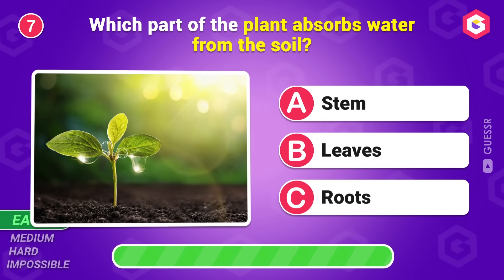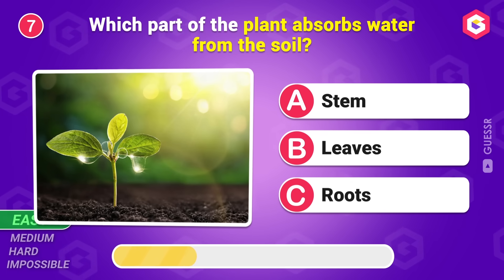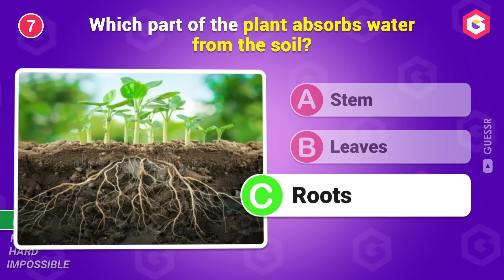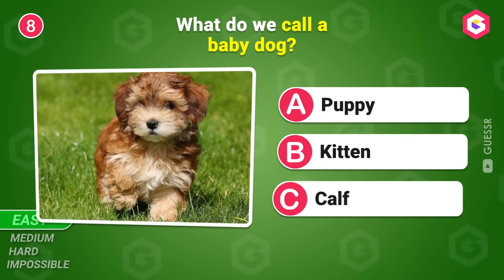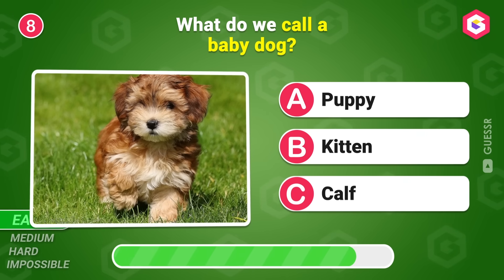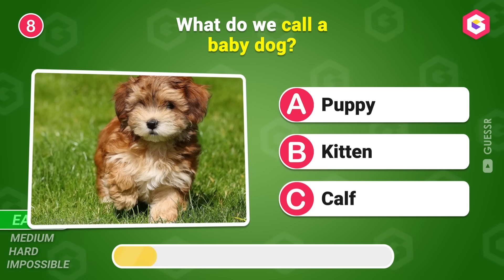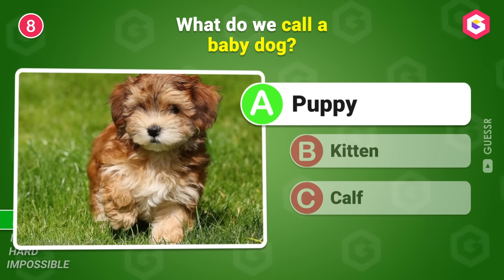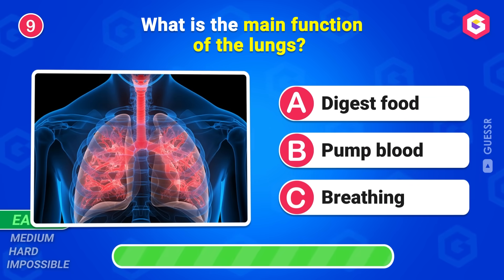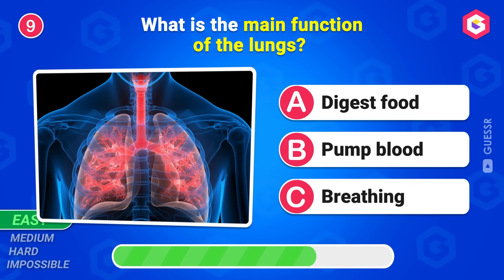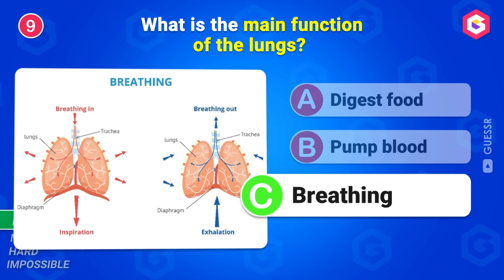Which part of the plant absorbs water from the soil? Roots. What do we call a baby dog? Puppy. What is the main function of the lungs? Breathing.